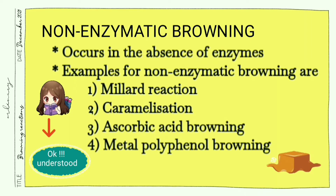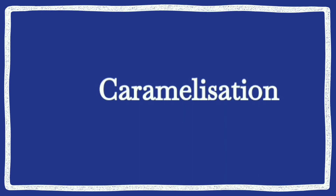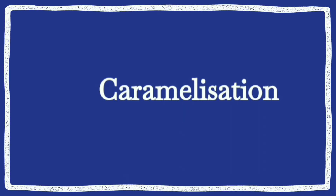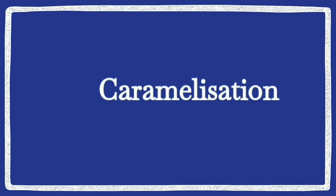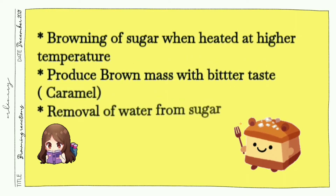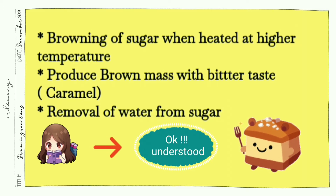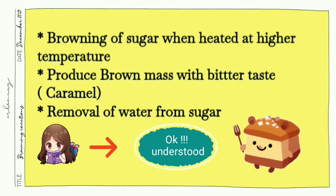The first example of non-enzymatic browning is caramelization. In our channel we have already uploaded a detailed video about caramelization. What happens is that when sugar is heated at higher temperature, water from the sugar is removed, and this results in the production of a brown mass which tastes bitter. This is widely used in bakery and confectionery.